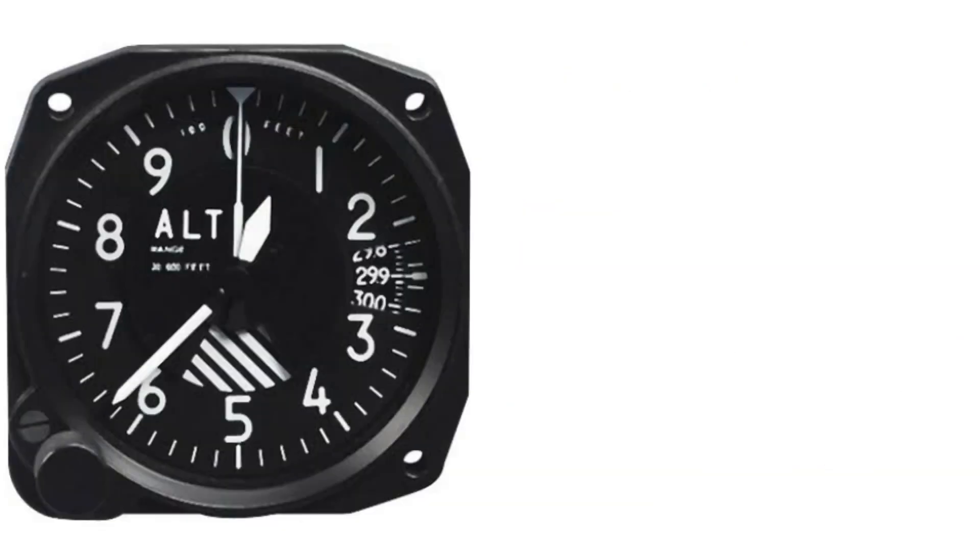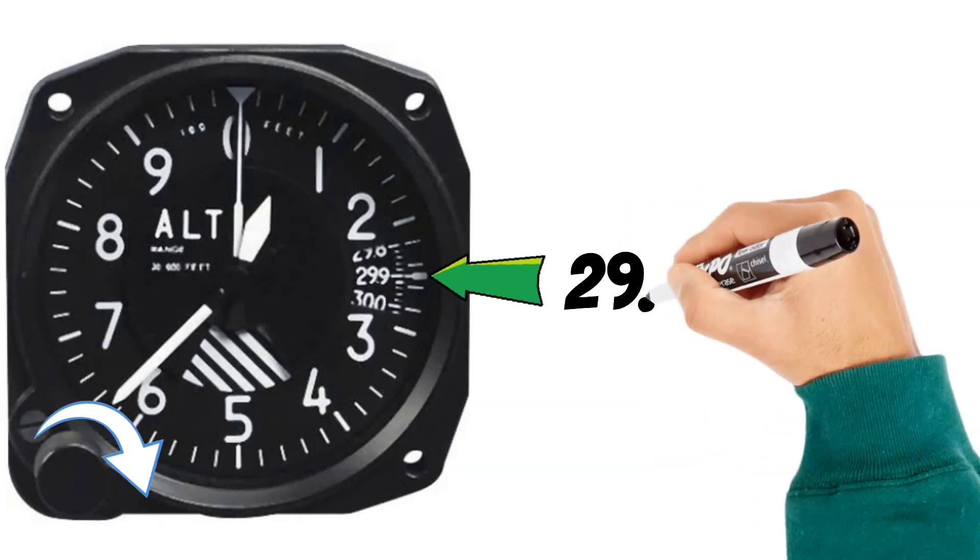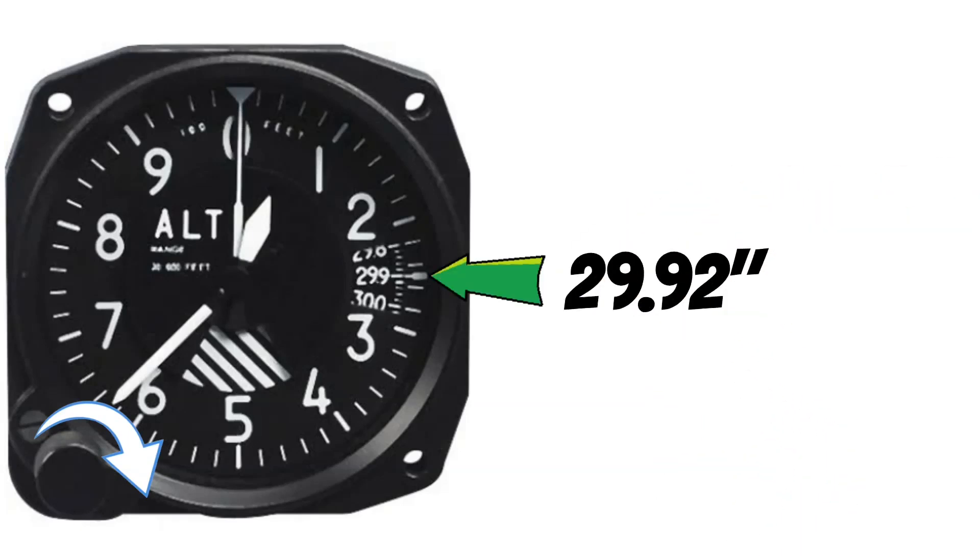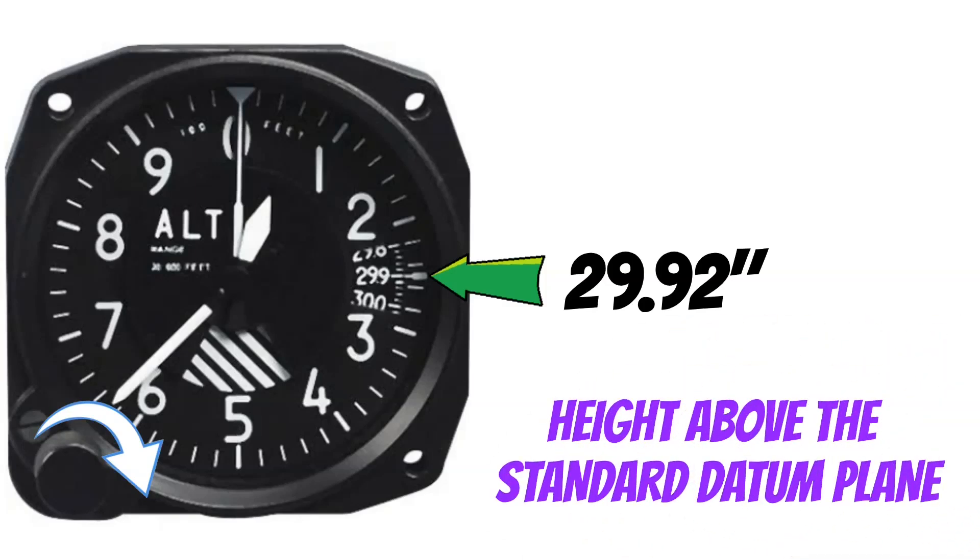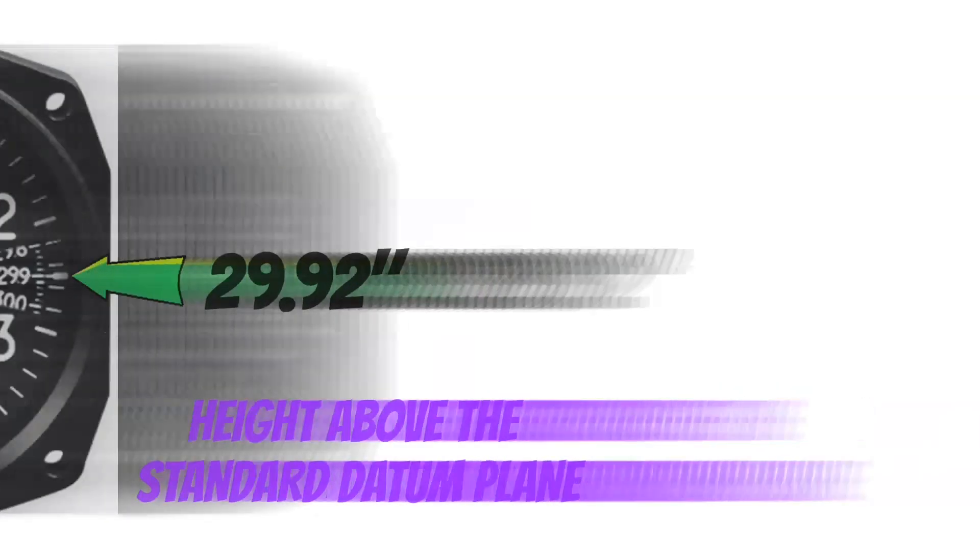Now you can get your altimeter to read pressure altitude by spinning this little knob until the Kollsman window reads 29.92. And with the altimeter in this configuration, it's now telling you your height above the standard datum plane. Well, why do I care about this?